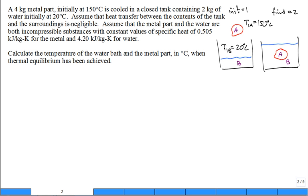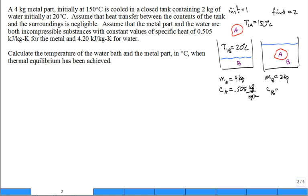Continuing to read the problem: heat transfer between the contents of the tank and surroundings is negligible, but there is heat transfer between the hot metal and the water. After placing the metal part in the water, both are treated as incompressible with constant specific heats. The metal mass M_A is 4 kilograms, specific heat of A is 0.505 kJ/(kg·K), mass of water is 2 kilograms, and specific heat of water is 4.2 kJ/(kg·K). Calculate the temperature when thermal equilibrium is achieved.